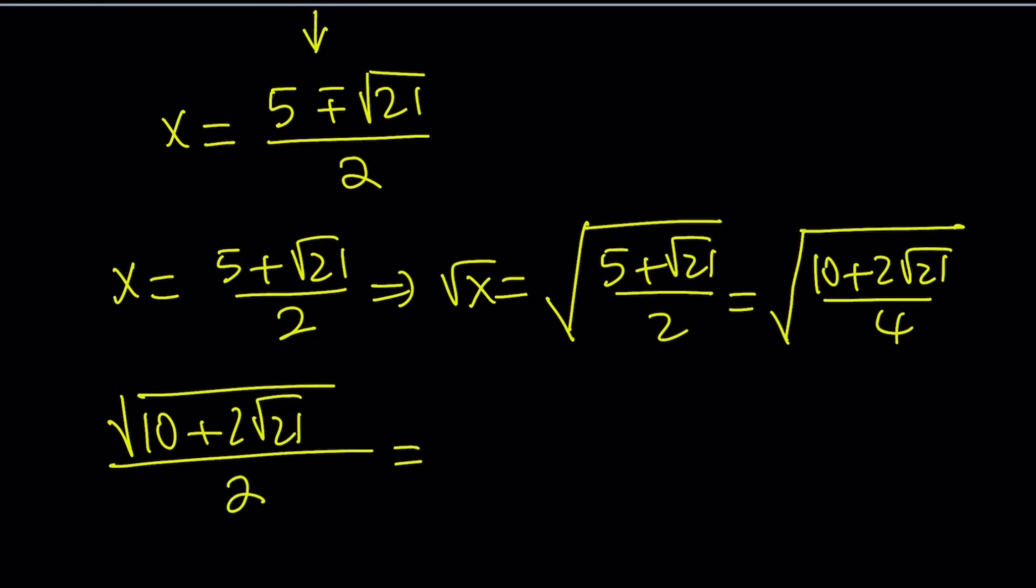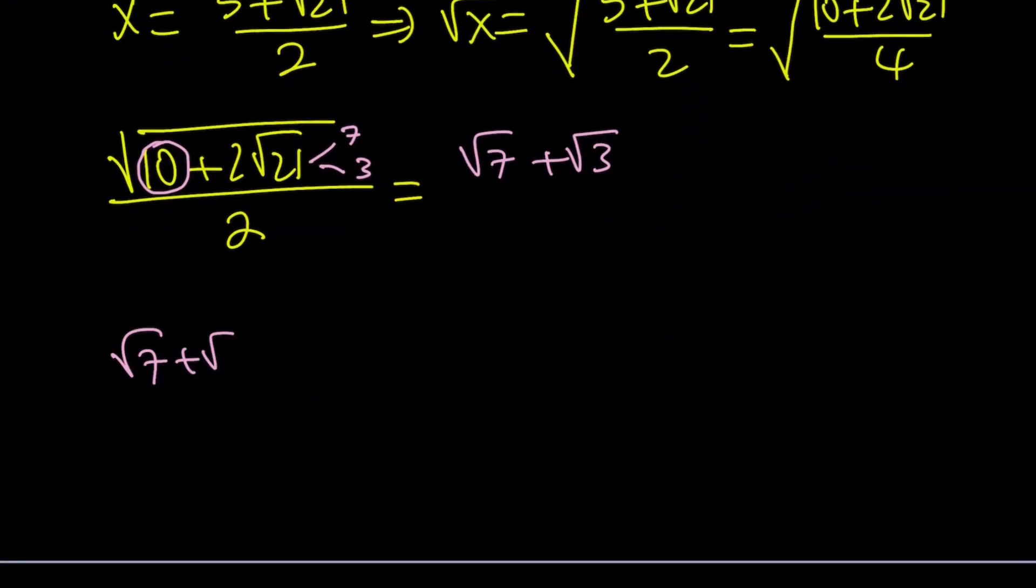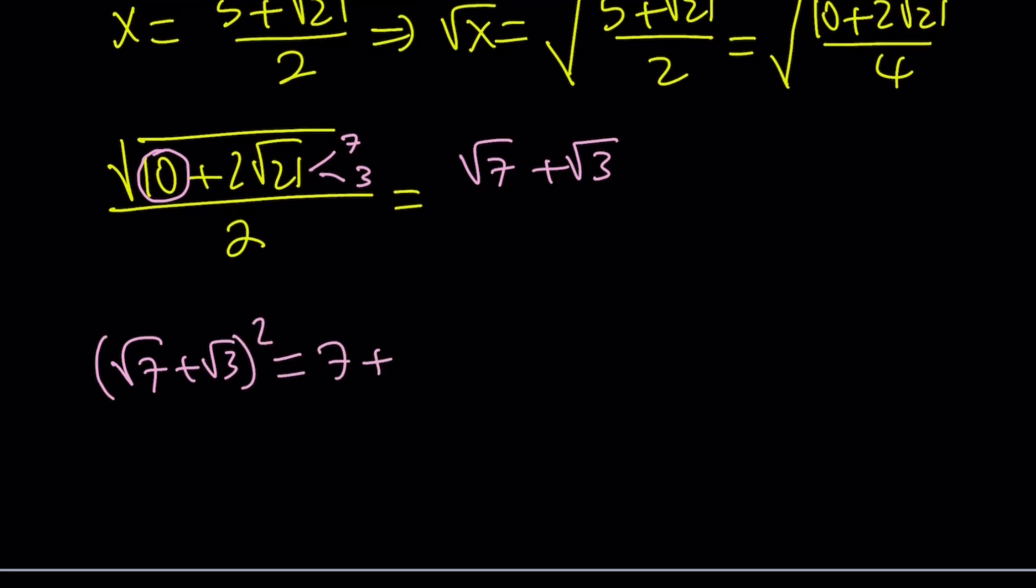But what about the square root of 10 plus 2 times square root of 21? That is actually a special expression. Find two numbers whose product is 21, and those numbers are 7 and 3, and whose sum is 10. So 7 and 3 satisfy this, and this gives us square root of 7 plus square root of 3. Why? If you square root 7 plus root 3, you get root 7 squared, which is 7, root 3 squared, which is 3, plus 2ab, which is going to give you root 7 times root 3 times 2. This explains the sum, and this explains the product.